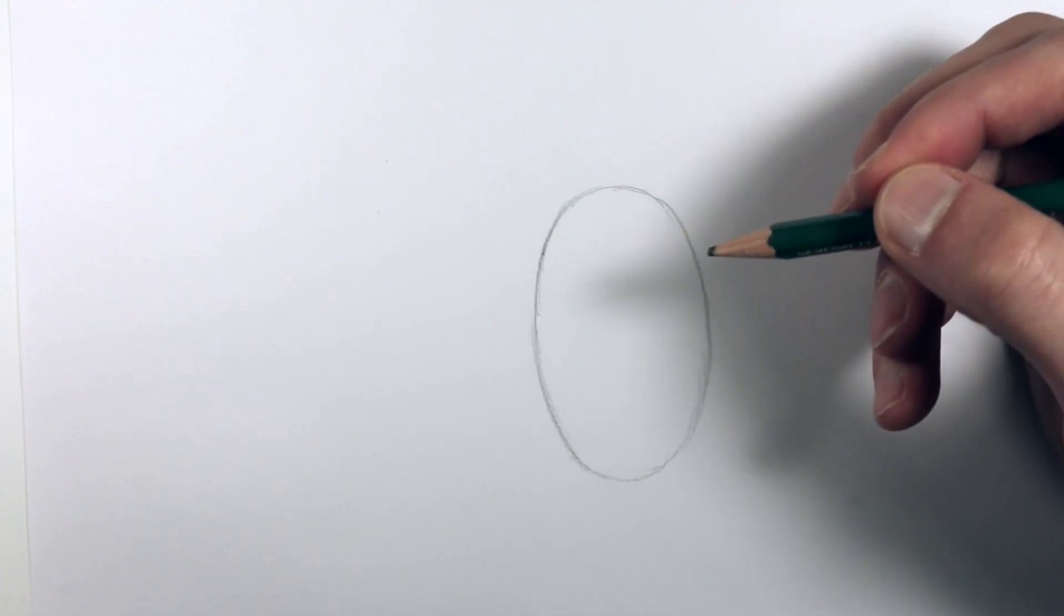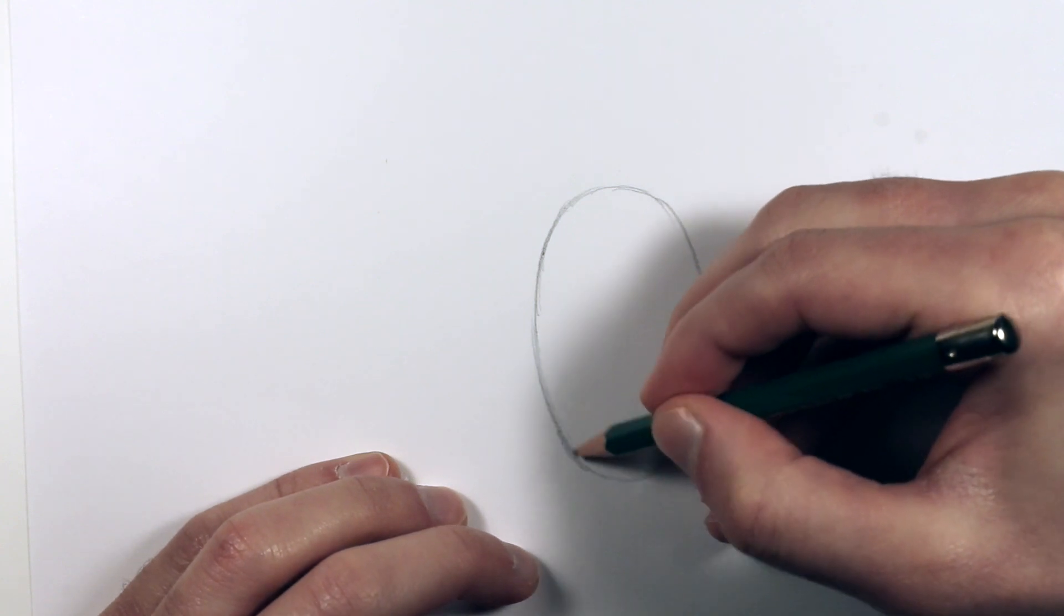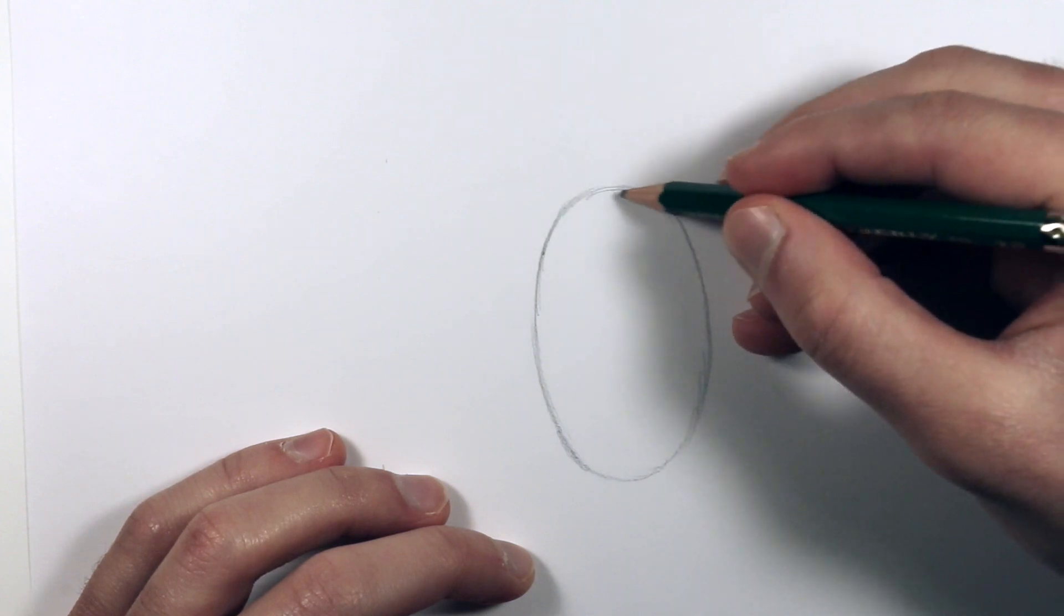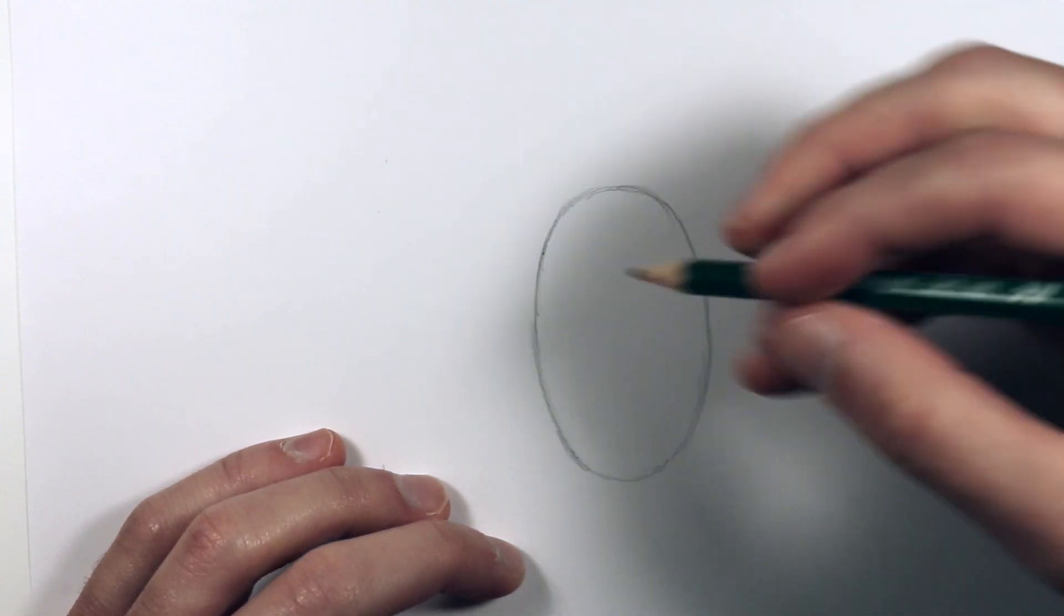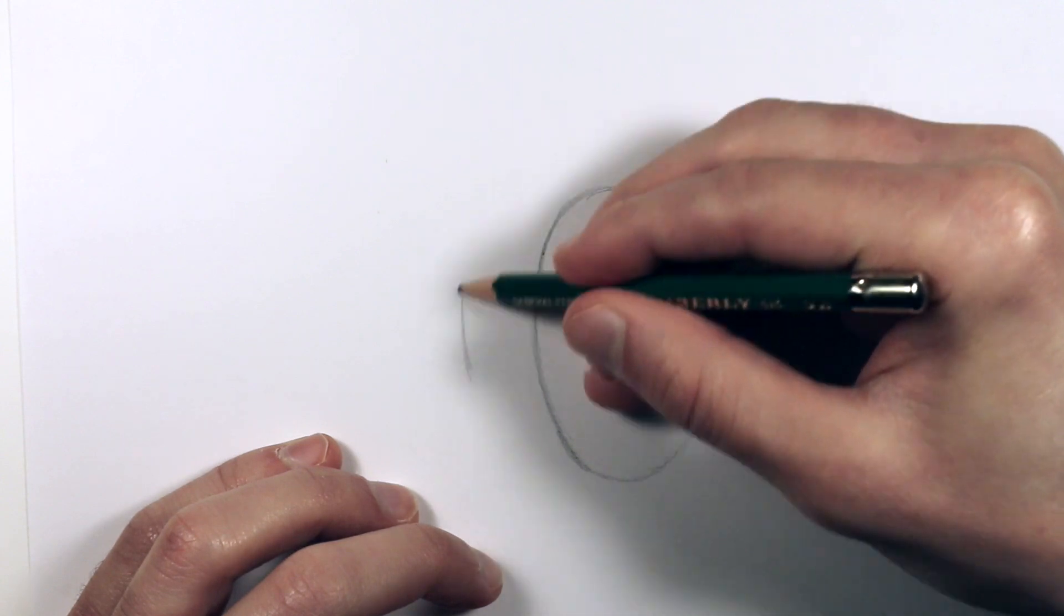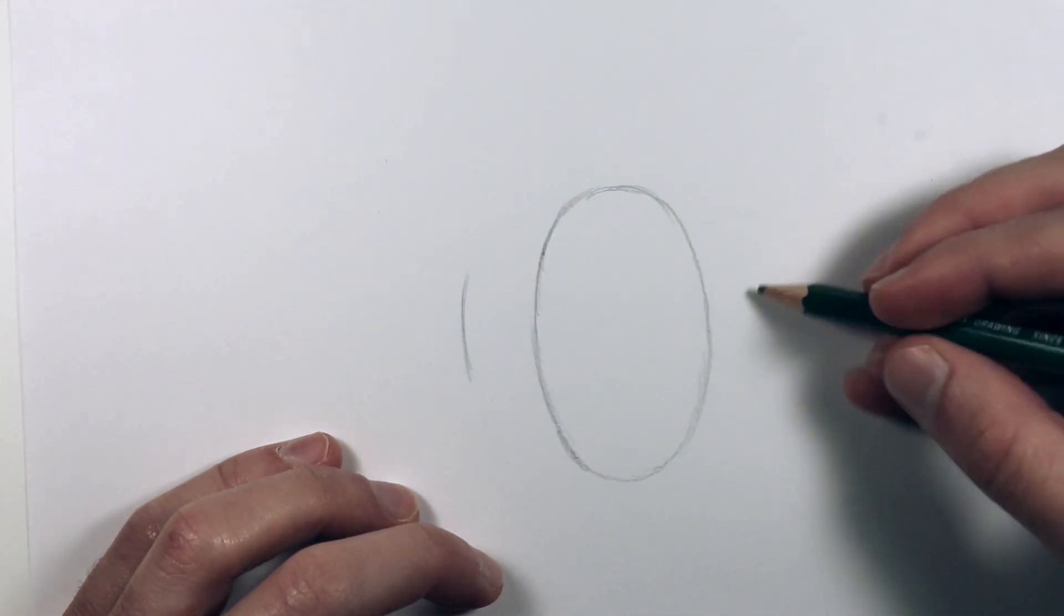So you can make it big, skinny, tall, chubby, whatever you want. But after you get the main middle part down, then you go to either side and just draw a line like that, and come to this side and draw a line.